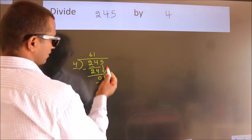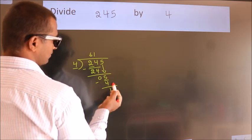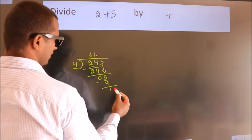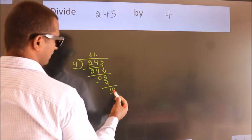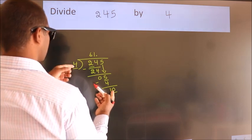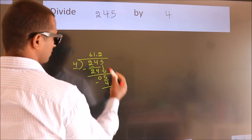After this, no more numbers to bring it down. So, what we do is, we put dot take 0. So, 10. A number close to 10 in 4 table is 4, 2, 8.